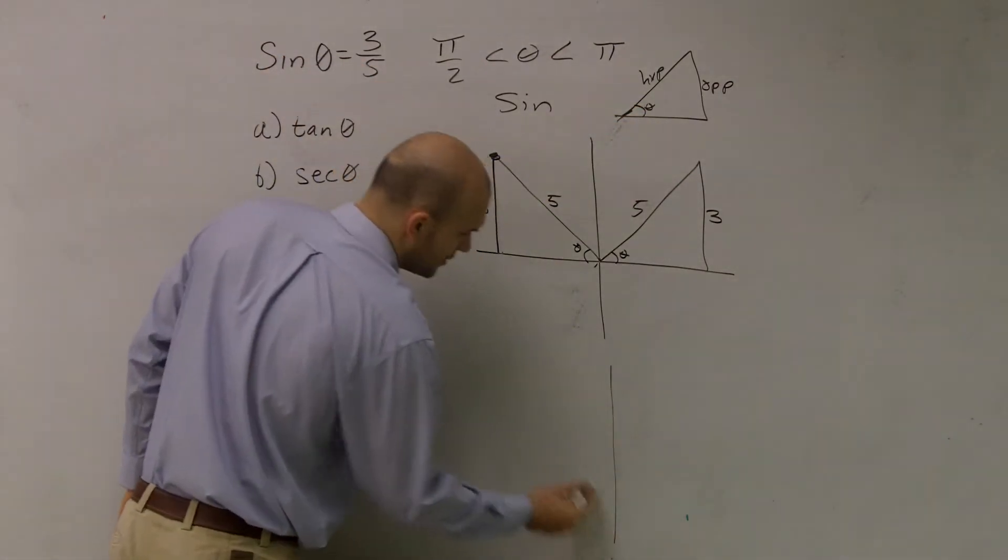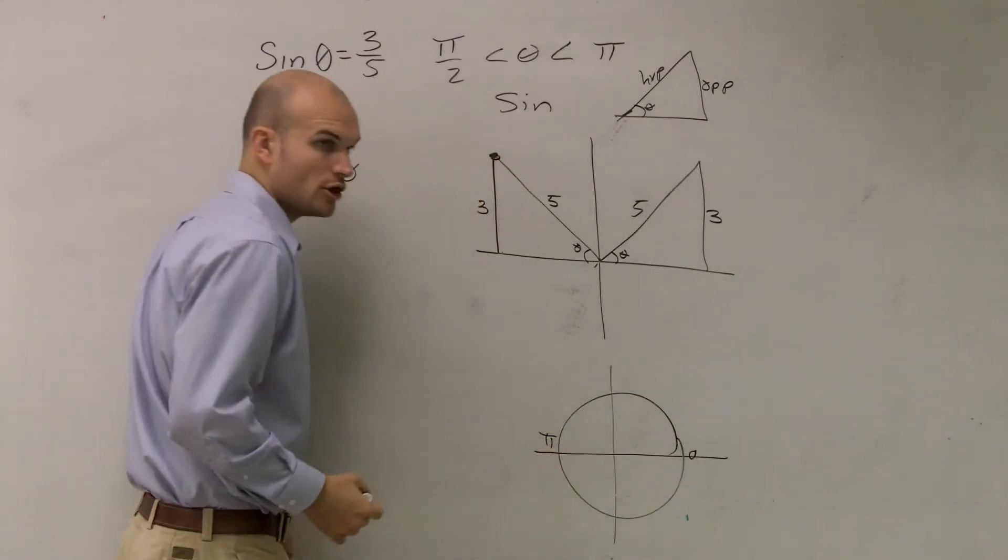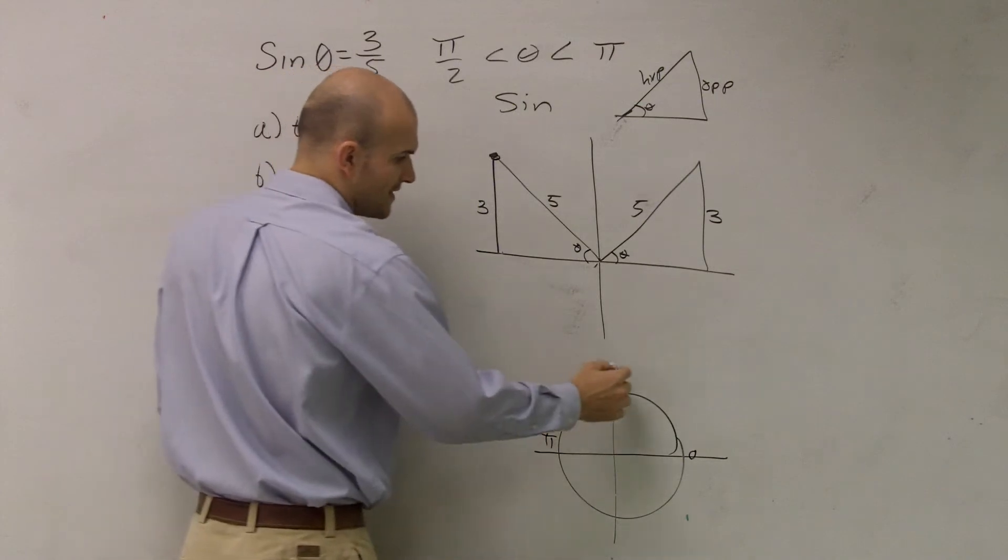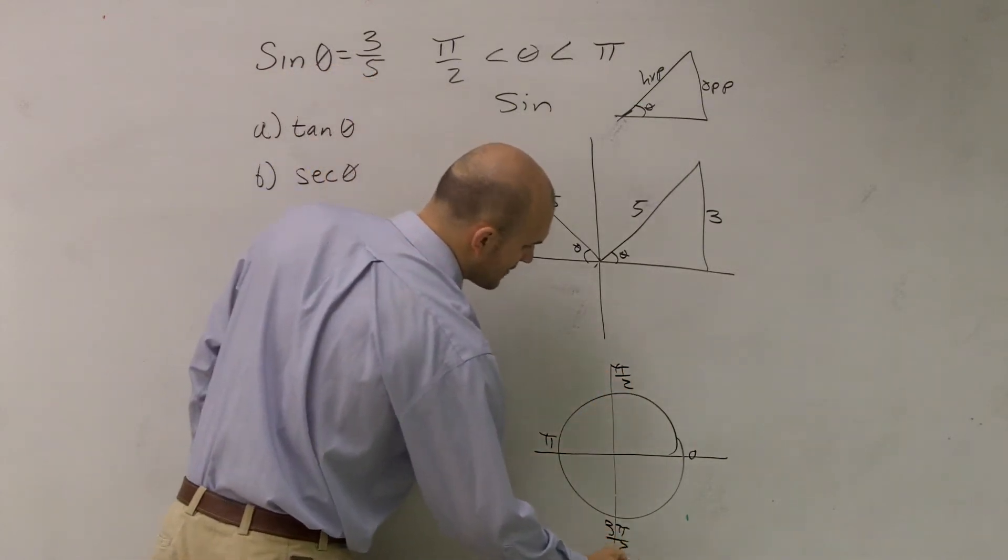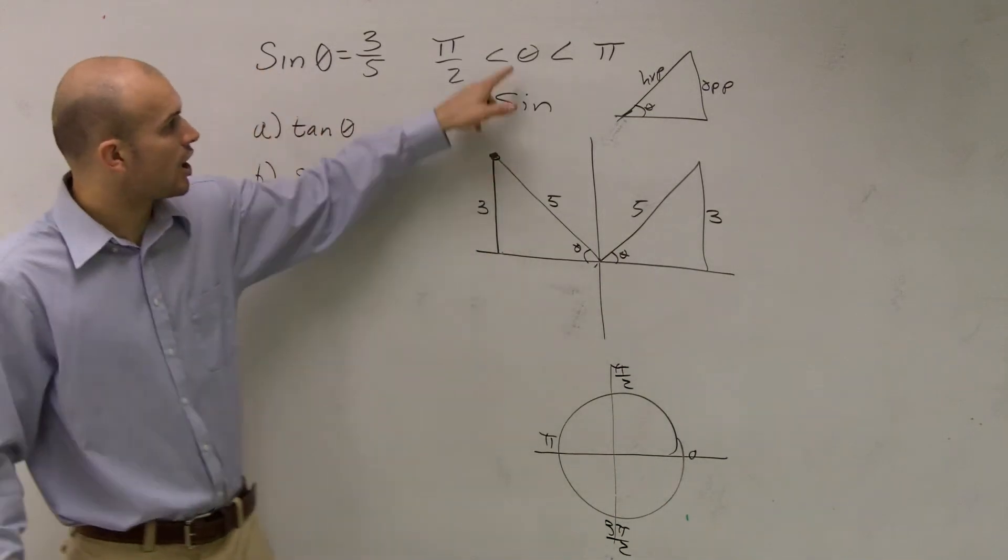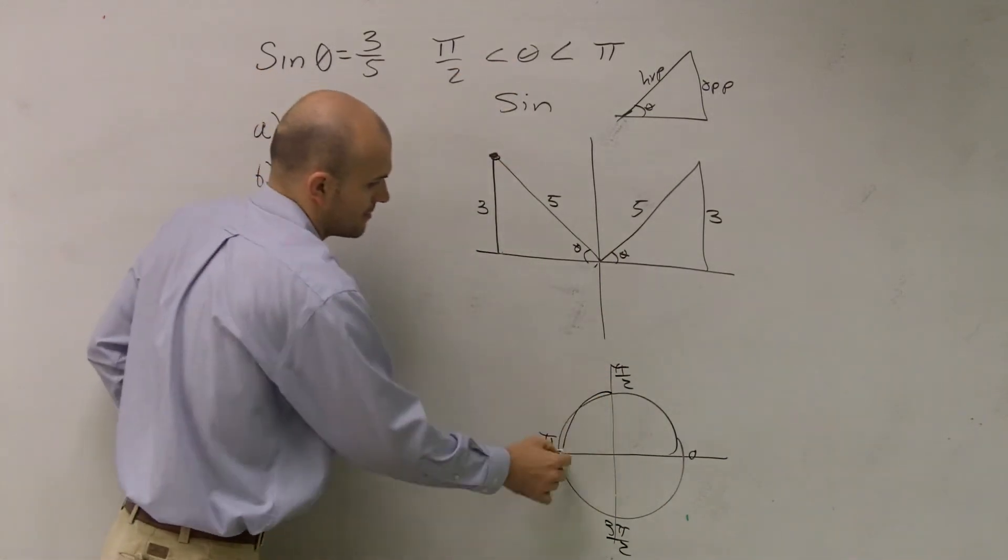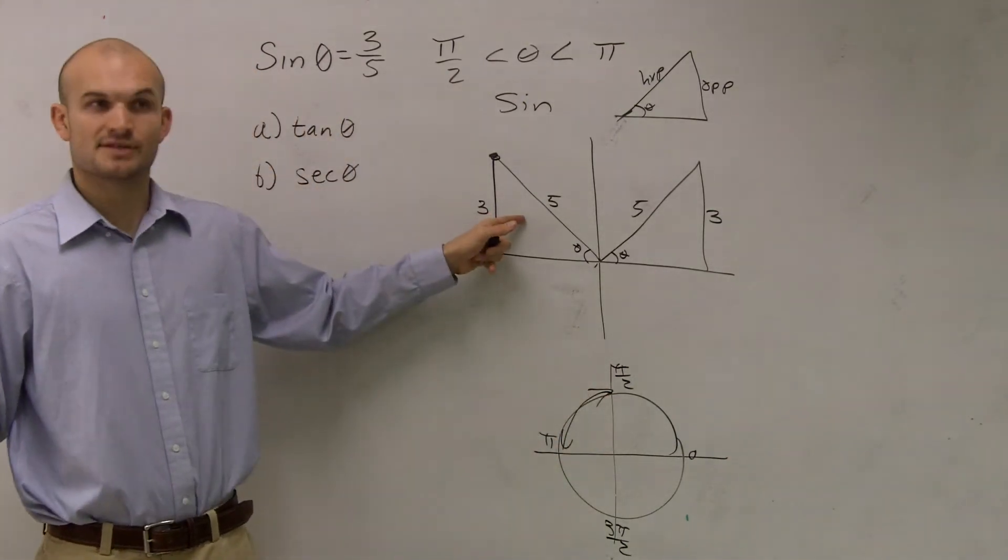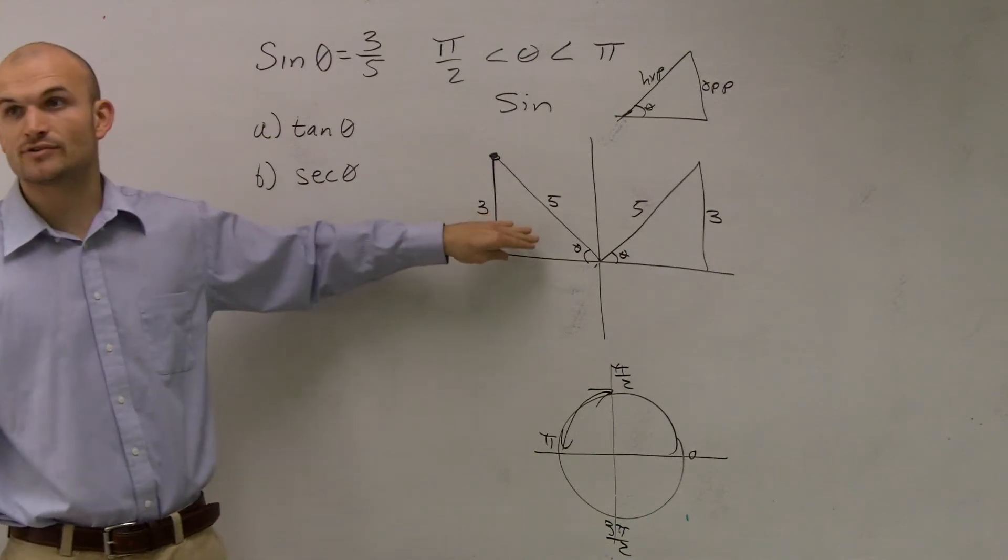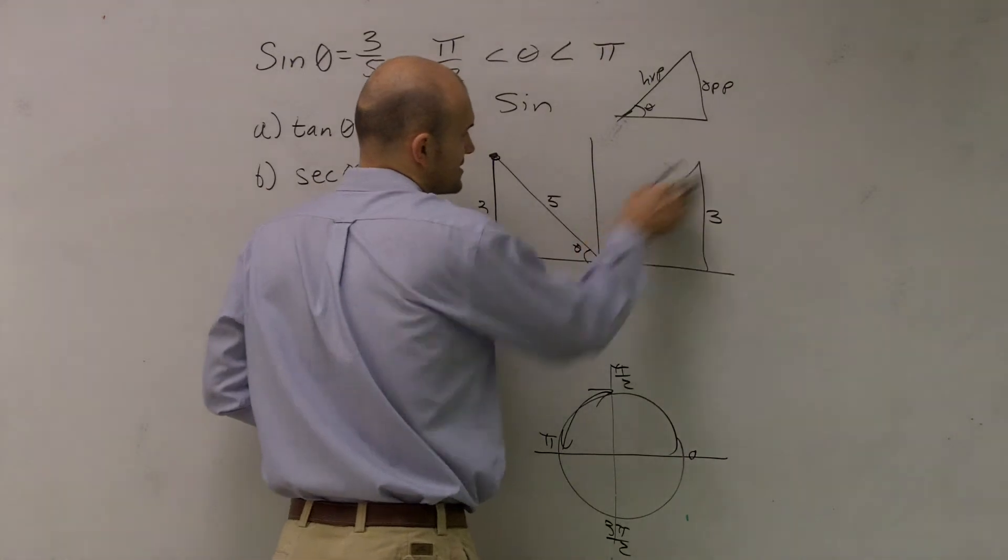Remember our unit circle? If it goes zero, and then half, and all the way, halfway around is π. Well, half of that is π/2, and then this one is 3π/2. So it says our angle theta has to be between π/2 and π. So which theta is in this quadrant? Obviously this one. So this is the triangle they want us to look at.